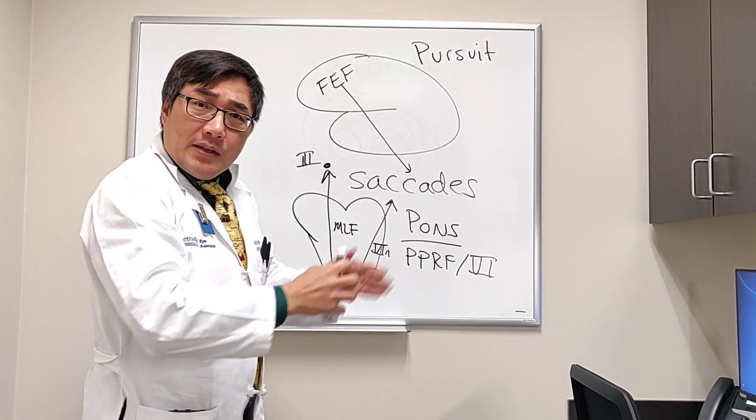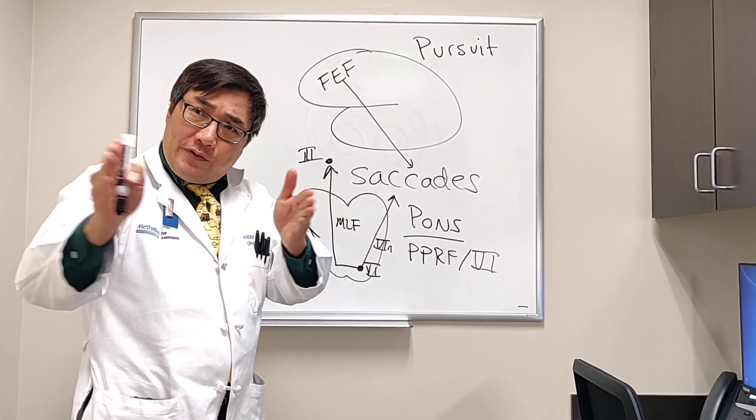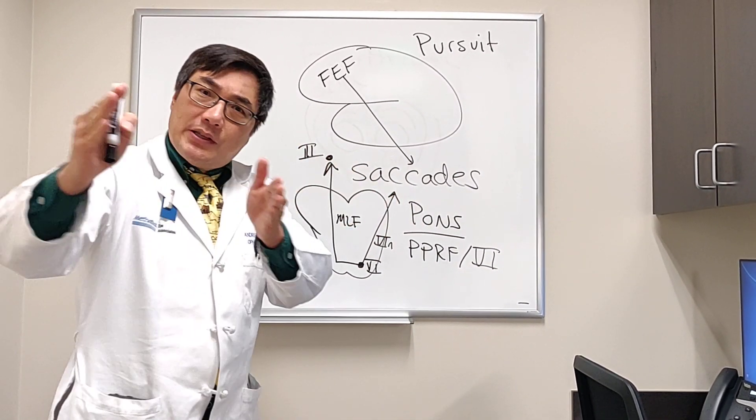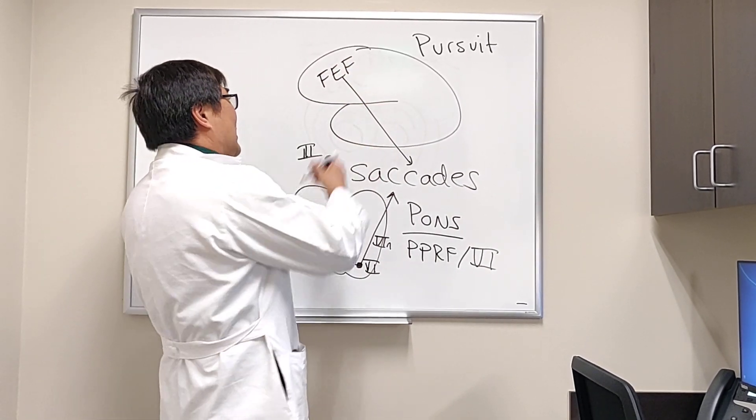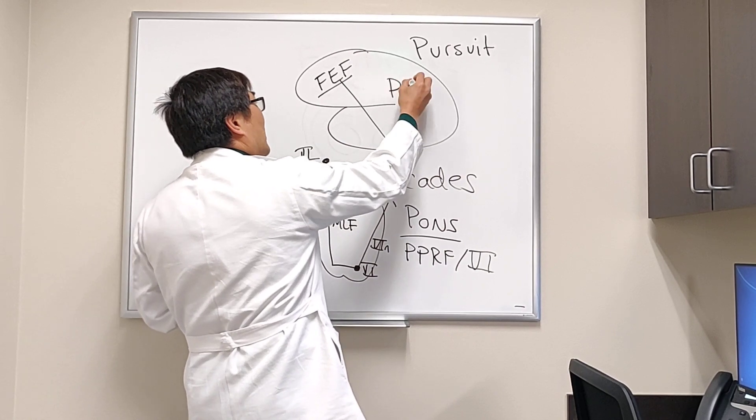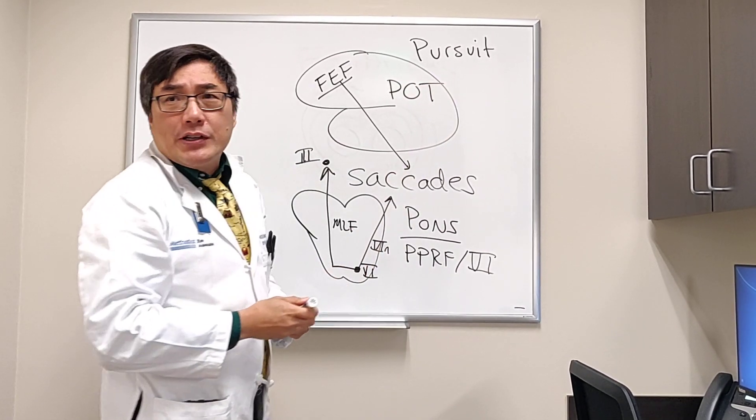So pursuit is the slow movement, we're pursuing a slow-moving target. We don't need the fast movement, which is the saccade. The smooth pursuit is generated not from the frontal eye field but from the parietal-occipital temporal region.